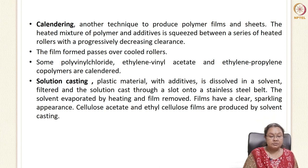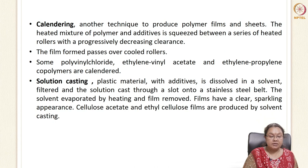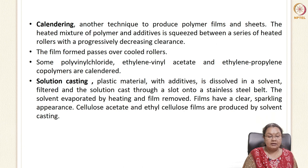Apart from extrusion and co-extrusion, polymers can also be developed using solution casting method, which is a very easy and commonly adopted method — usually at laboratory scale. In this method, the plastic material and additives are dissolved using a solvent, then filtered and cast on a slot or stainless steel belt at industrial scale, or trays and Petri plates at laboratory scale. The solvents are evaporated by heating and the film can be peeled off. These films are clear and sparkling in appearance; cellulose acetate and ethyl cellulose films are produced by this method.